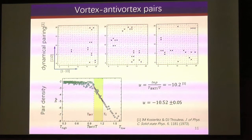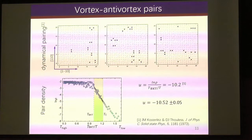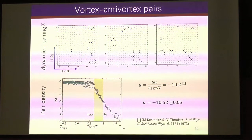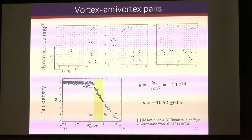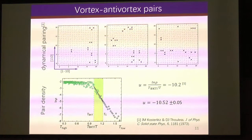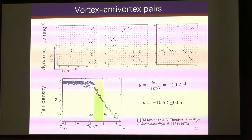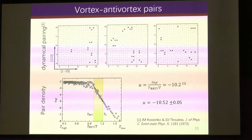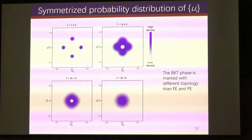These vortex-antivortex pairs are dynamically stable. Although we didn't run MD simulations, with many MC steps we can see that indeed some pairs are annihilated and some are created. We also look at the pair density, plotting the natural log of pair density as a function of TBKT/T. According to the theory, the slope in this plot corresponds to the chemical potential. The theoretical chemical potential for a BKT phase is −10.2, and our fitting gives −10.5, which is very close to the theoretical value.